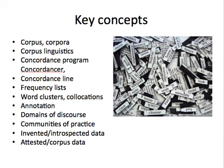The tool used in corpus linguistics is called a concordance program, or more appropriately, a concordancer. A concordancer has the ability to search massive amounts of electronic text and produce what's called a concordance line. In that concordance line, there will be a target word, illustrating all the different contexts that word occurs in. It will also give you a frequency list — a list of the most commonly occurring words.